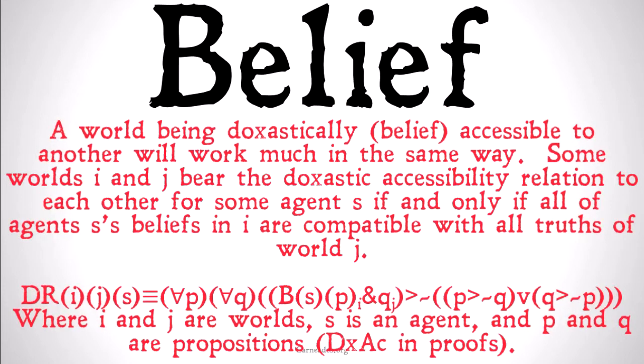A world being doxastically accessible, on the other hand, to another world, will work much in the same way. Some worlds I and J bear the doxastic accessibility relation to each other for some agent S, if and only if, for all of agent S's beliefs in I, those beliefs are compatible with all truths of world J. So doxastic accessibility holds between two worlds I and J, and some subject S, if and only if, for all P and all Q where P and Q are propositions: S believes that P in world I and Q is the case in world J implies that it's not the case that P implies not Q or Q implies not P. We use that as DXAC in proofs.